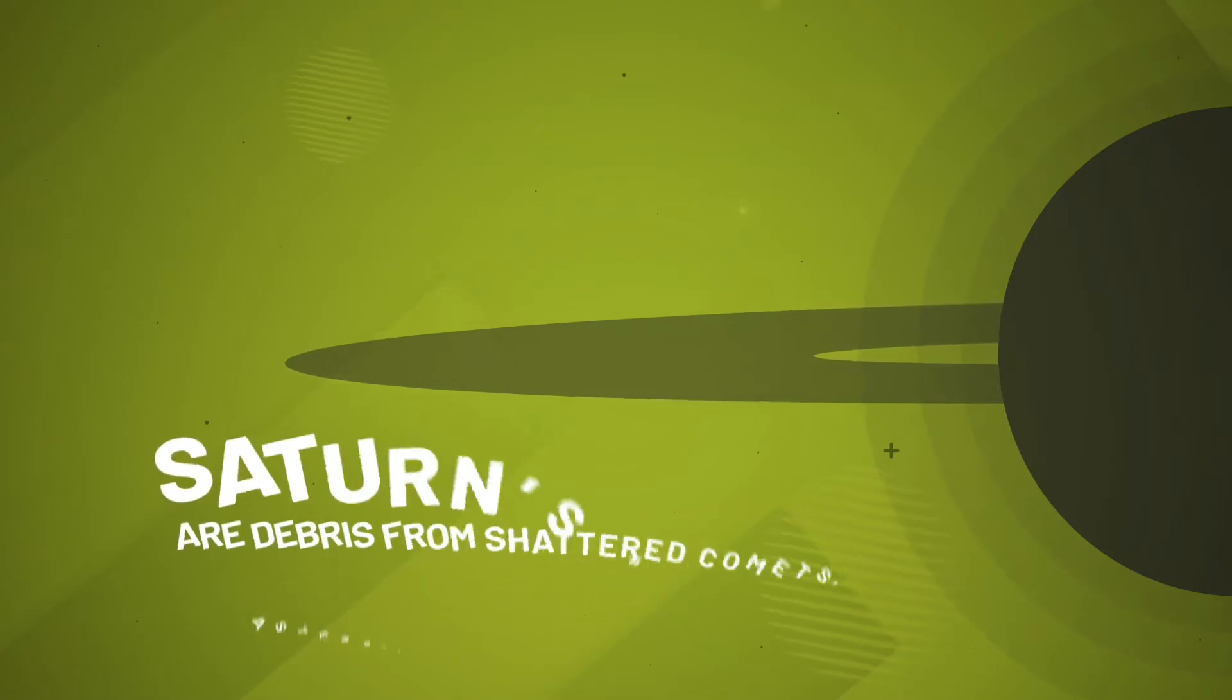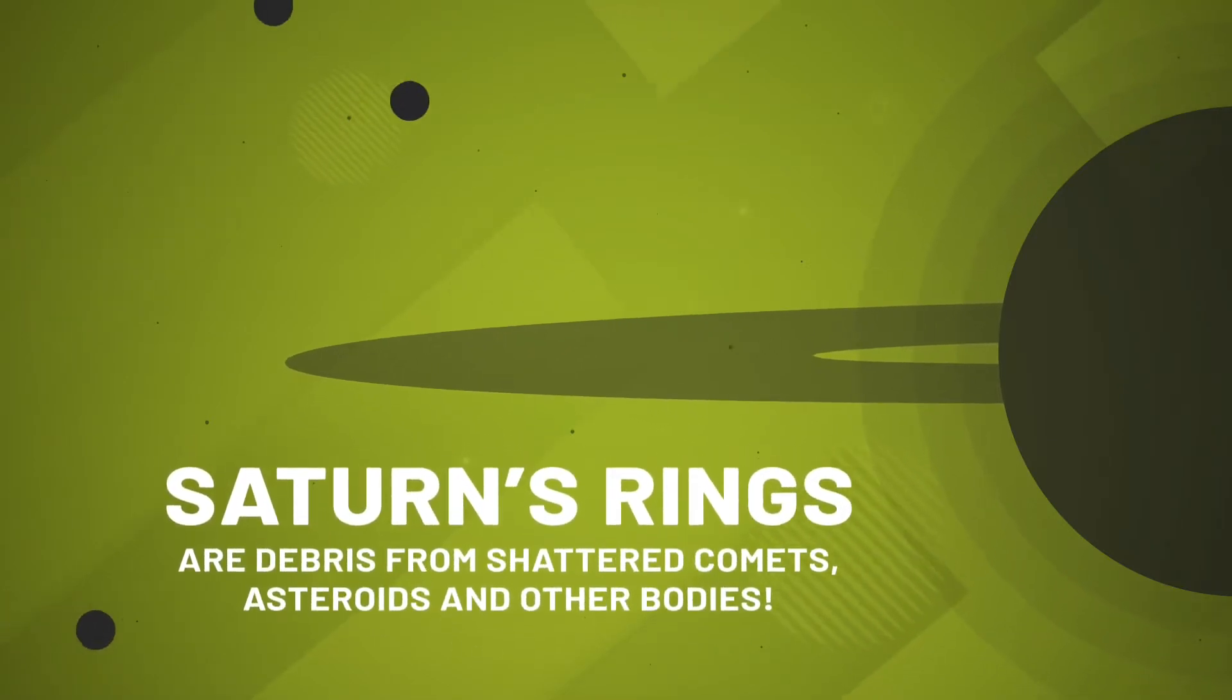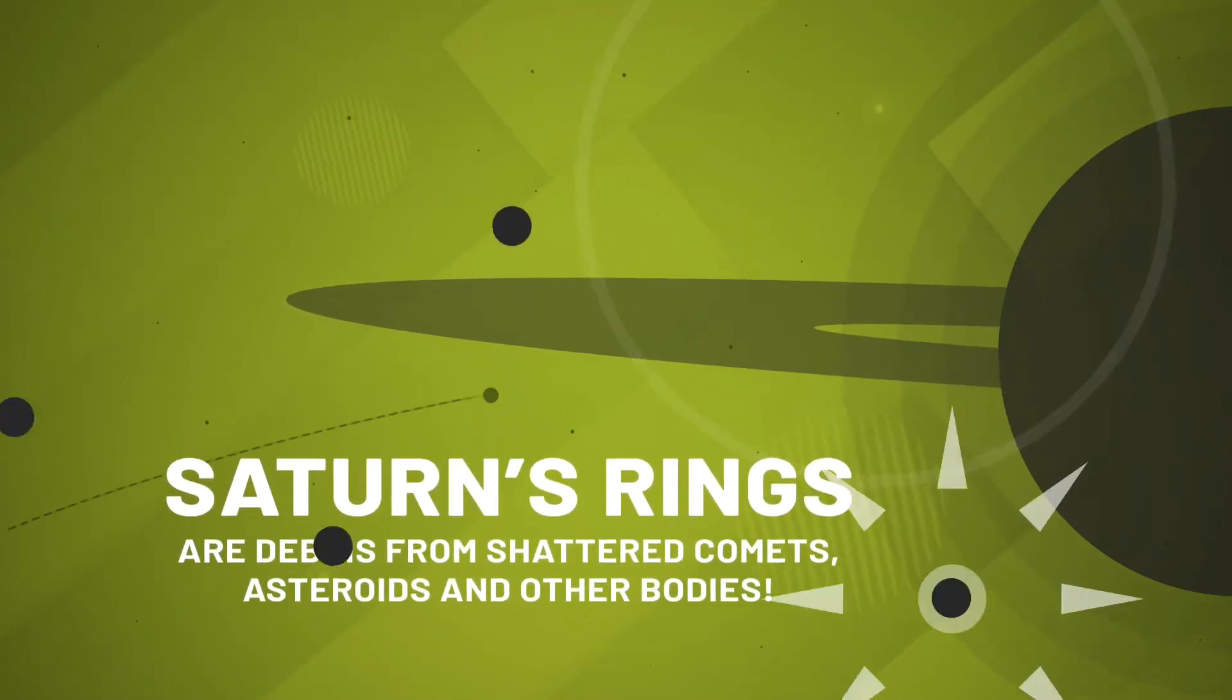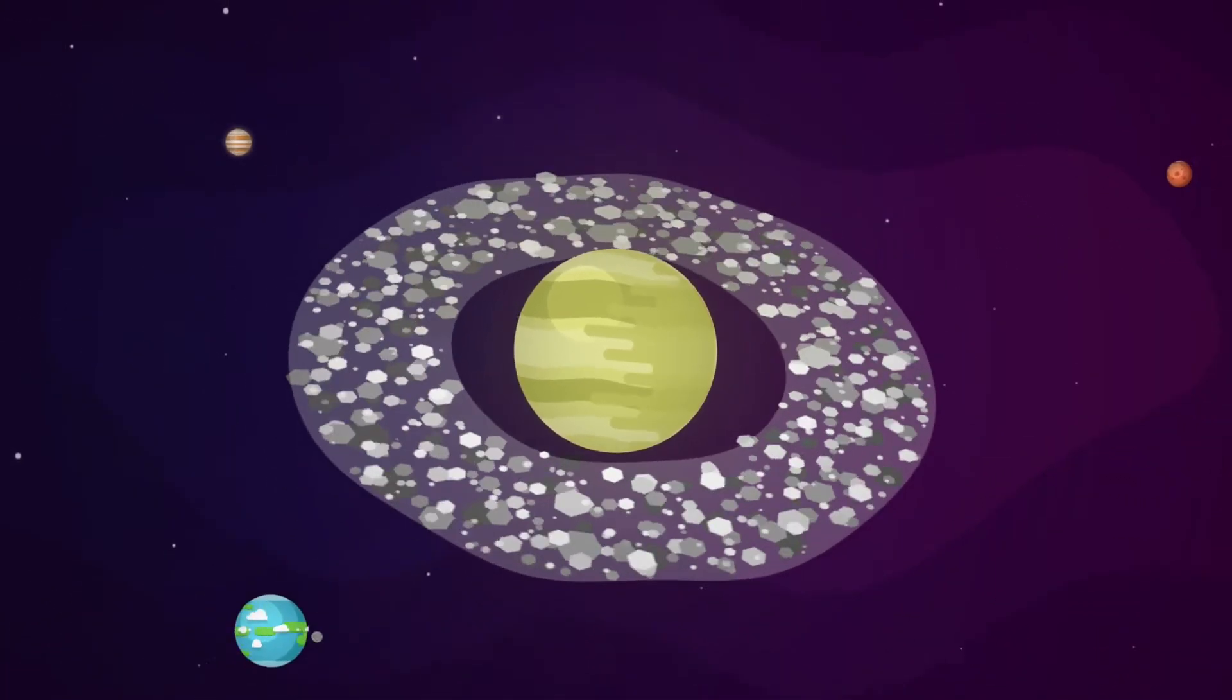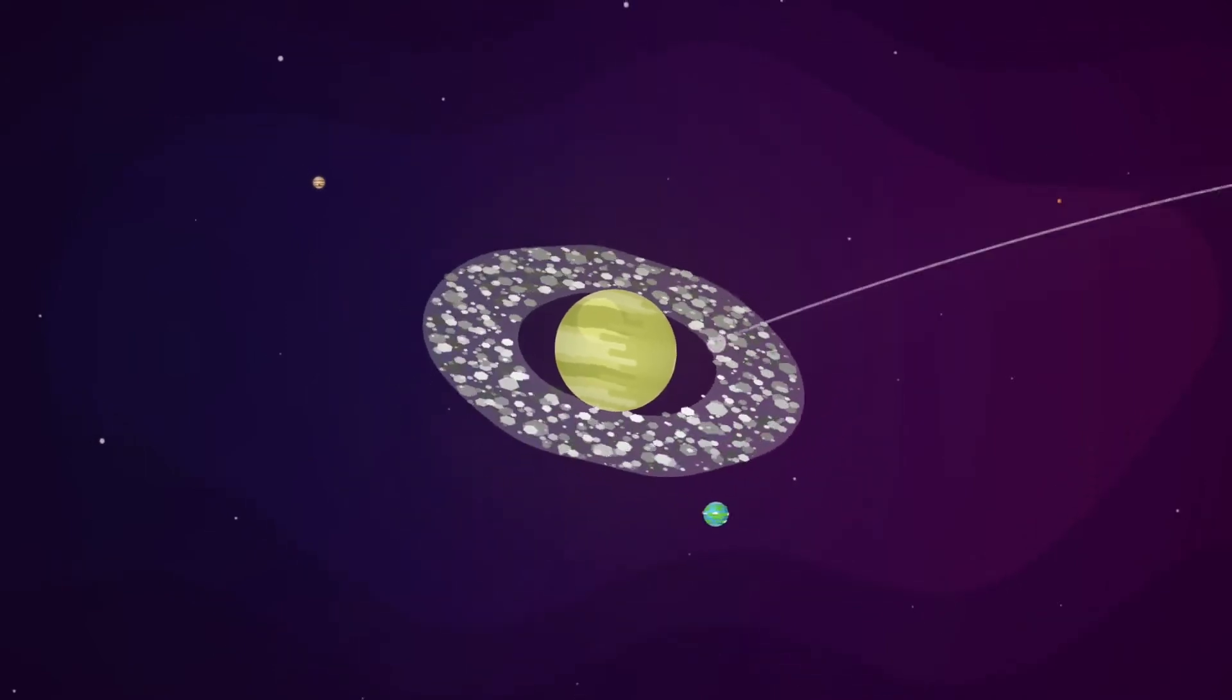These amazing rings are thought to be the result of comets, asteroids, moons, and other bodies crushed into oblivion by the planet's strong gravity before they could reach the surface. These billions of icy leftover pieces orbit Saturn, shining throughout the cosmos.